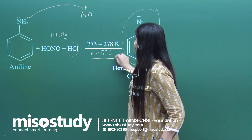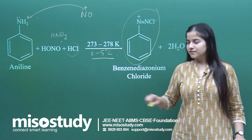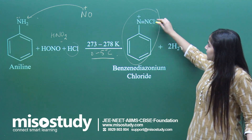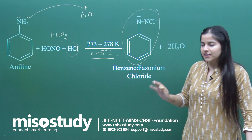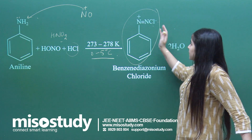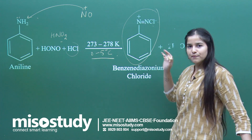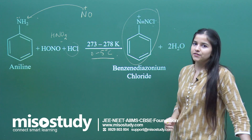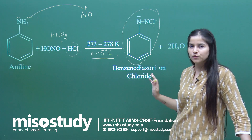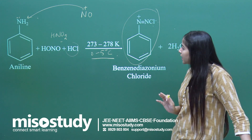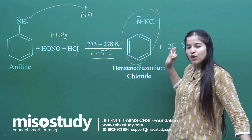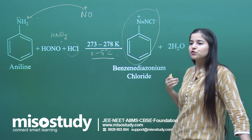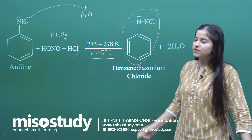In some books the temperature might be written differently in degree Celsius — always remember. After all the rearrangements are done, we finally get BDC, which is a highly resonance-stabilized product. This is formed in the diazotization process. Once BDC is formed, it is a versatile reagent to go about with various reactions.